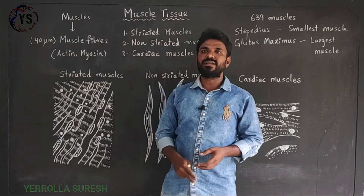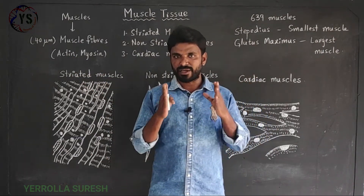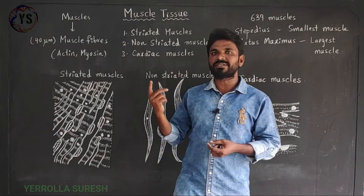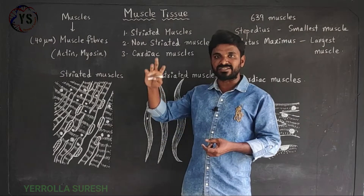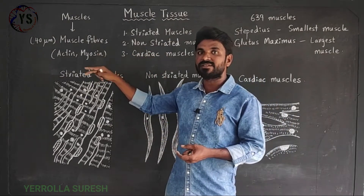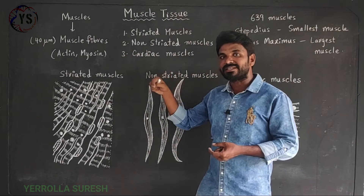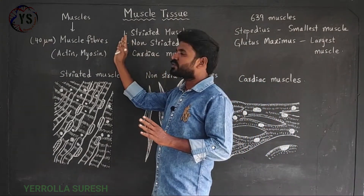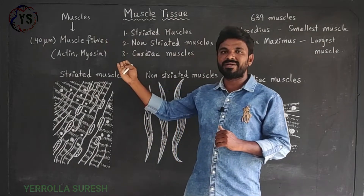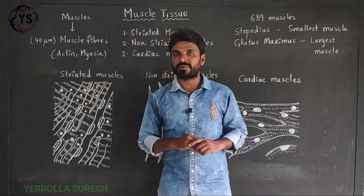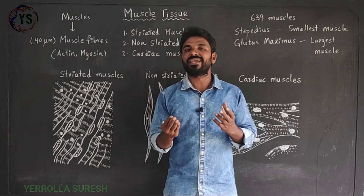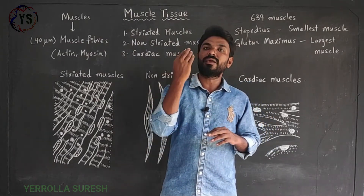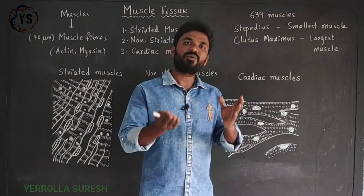Muscle fibers are made of proteins called actin and myosin. The proteins actin and myosin slide on each other, creating contractions and relaxations inside the muscle cell. Due to these contractions and relaxations, the muscle cell can create movement in the body part. So muscles are made of muscle fibers, and each muscle fiber is made of actin and myosin proteins, which create movement so that the organism or body part can be moved.